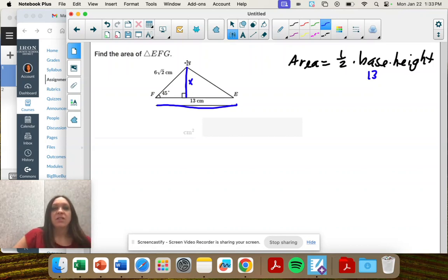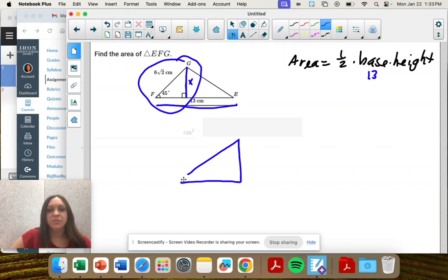So let's use this triangle and it is a 45, 45, 90. So this is 45, that means this is 45. And what do we know about 45, 45, 90?